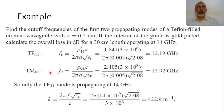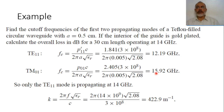In similar steps, the following mode is TM01. For TM01, the cutoff frequency is B_01 times c over 2π A times square root of epsilon_r. B_01 is the first root of J_0(x), which is 2.405. So the cutoff frequency of TM01 is 15.92 GHz.